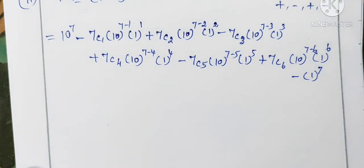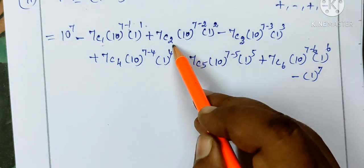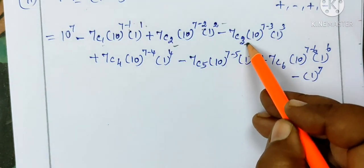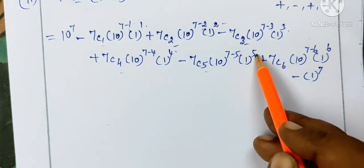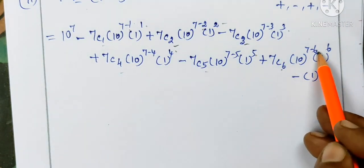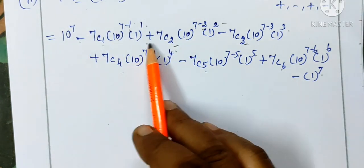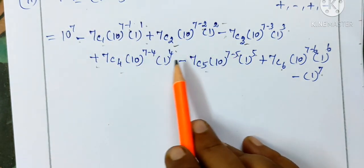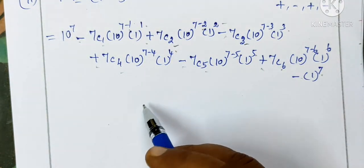First check: power 1, then power 2, 3, 4, 5, 6, then last 7. Then minus, plus, minus, plus, minus, plus, then minus. This is the pattern. Check the signs correctly.